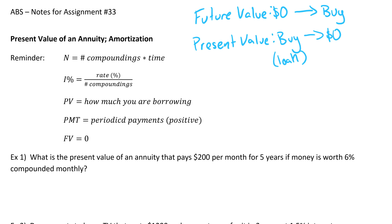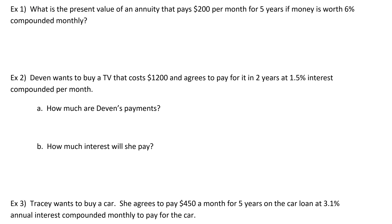Most of this is going to be the exact same as future value with a couple of small differences. N and I are the same. Since we're working with present value, that's going to be the amount that you're borrowing — it's not zero anymore. Instead, future value is going to be zero, because we always want to end with zero dollars, meaning we paid off the loan. The payment is almost the same, but we're going to put it in as positive this time, unlike when we were doing future value.